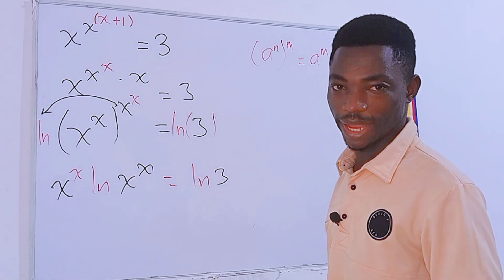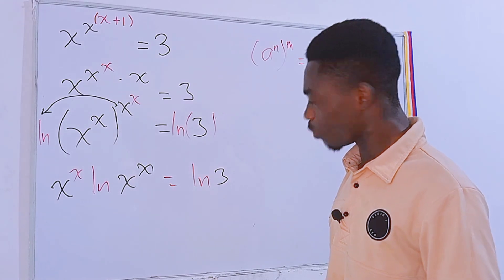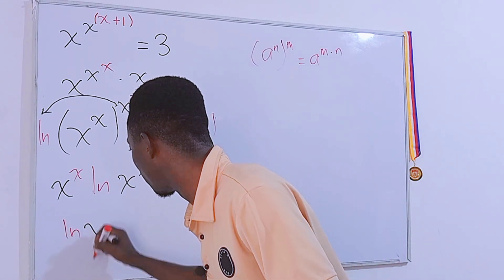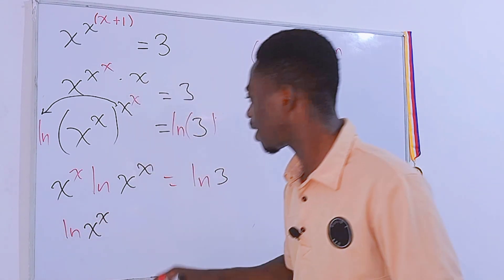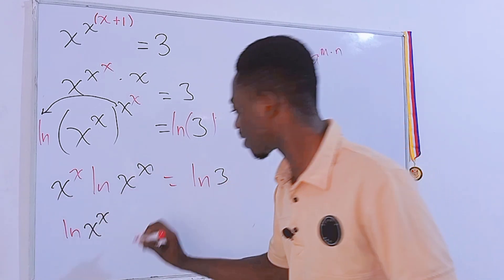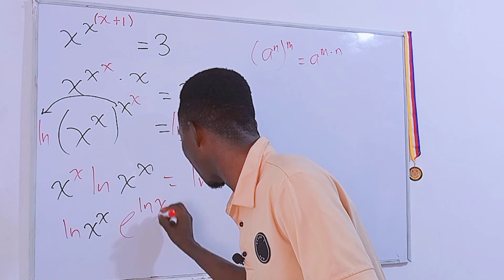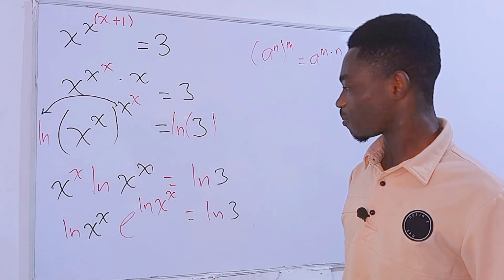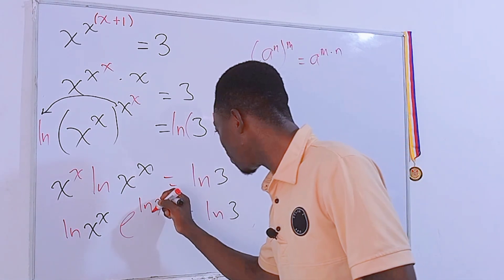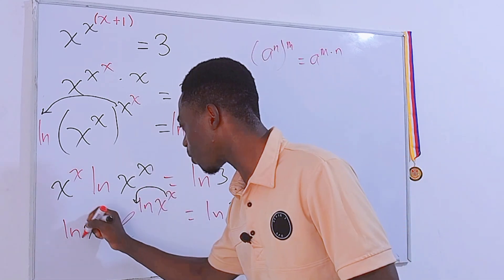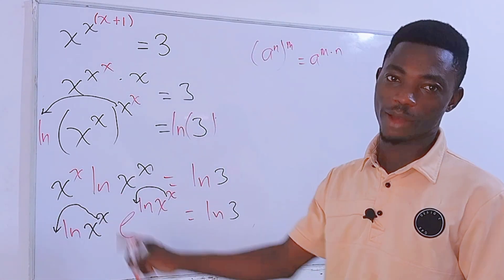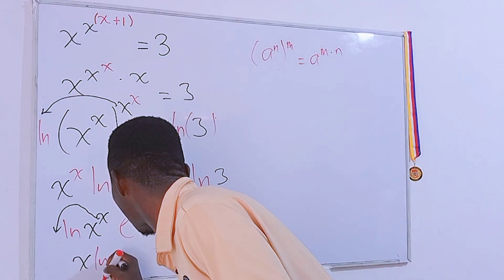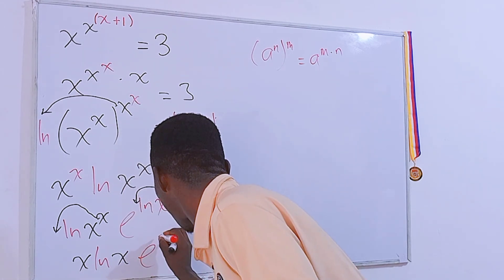It seems we are almost stuck, but we are not. I am going to rewrite this first. We will have ln of x to the power x, and then I will see this x to the power x as e to the power ln(x to the power x). This is equal to ln of 3. Now the door is open — we can move this power to the front, and likewise move this power to the front, because we have ln.